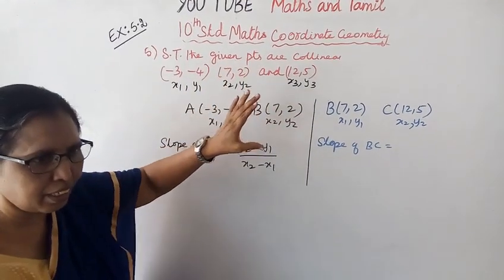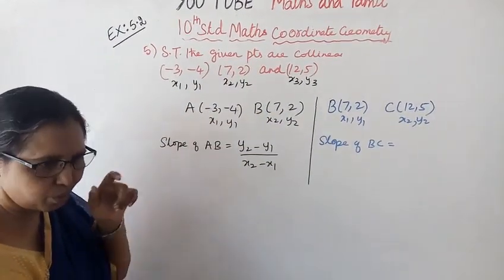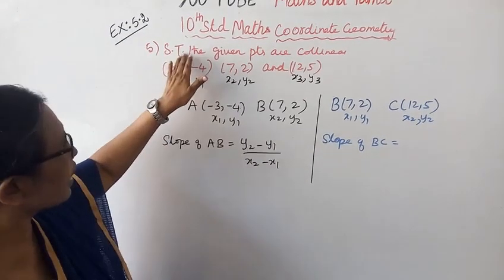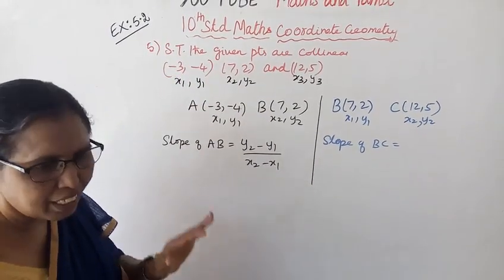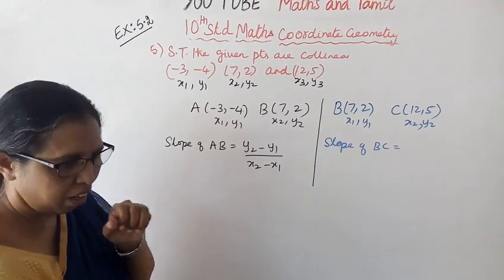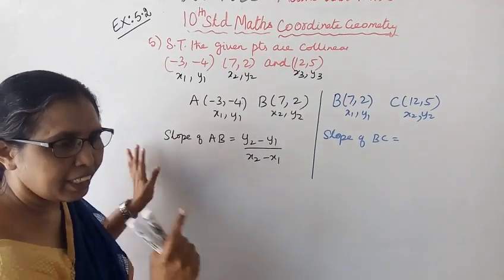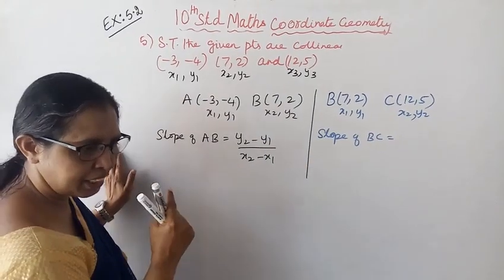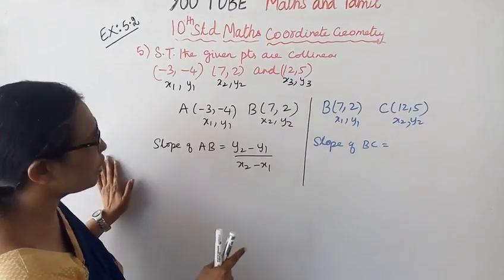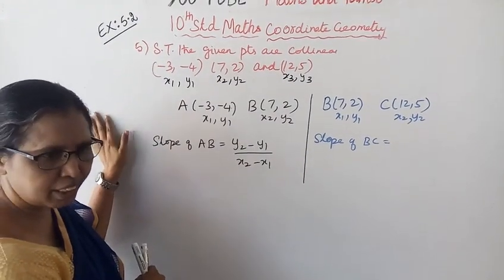In 5.1 exercises, to show that the given points are collinear, we use the area of a triangle formula. If the area of triangle ABC value is 0, then the given points are collinear.